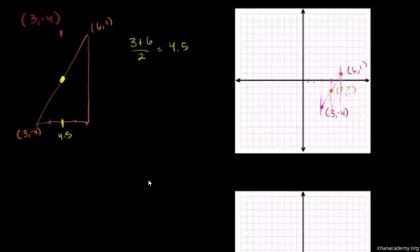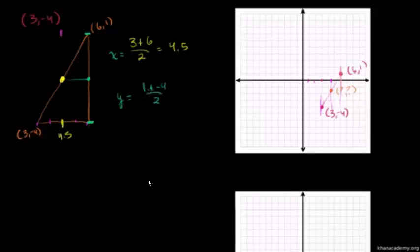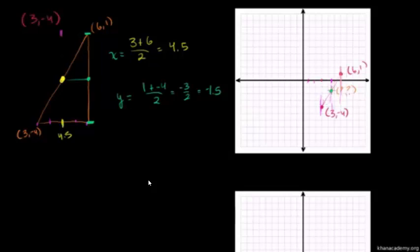By the exact same logic, this guy's y coordinate is going to be smack dab between y is equal to negative 4 and y is equal to 1. So you just take the average: 1 plus negative 4 over 2. That's equal to negative 3 over 2, or negative 1.5. So you go down 1.5 — it is literally right there. You literally take the average of the x's, take the average of the y's, and you will get the midpoint of those 2 points. It's the midpoint of the line that connects them. So the coordinates are 4.5, negative 1.5.